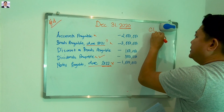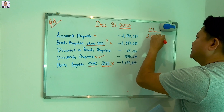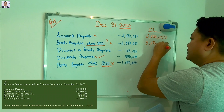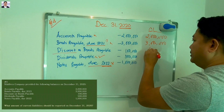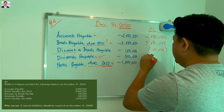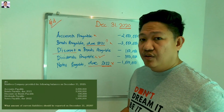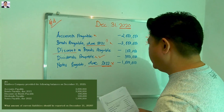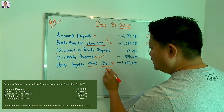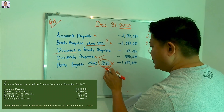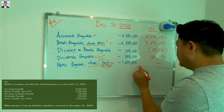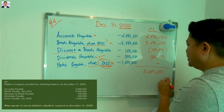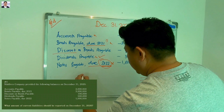So this is your current liability section of the balance sheet: accounts payable of 2 million; bonds payable due in 2021 of 3 million, less discounts on bonds payable; and dividends payable — included because it will not remain outstanding more than 12 months from the declaration date. Notes payable maturing in 2022 is not included. Your total current liabilities should be 5 million 400 thousand. That is your final answer — label it current liabilities, December 31, 2020.